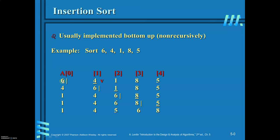Starting with 6 — when only one element is in the array, it will be in sorted order. Consider 4: try to place it in the appropriate position. Compare 4 with 6. Since 6 is larger, push it towards the right, then insert 4 here.